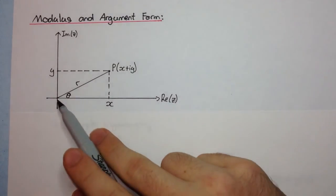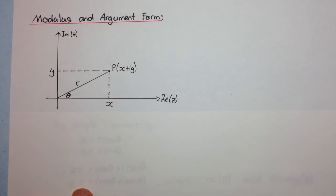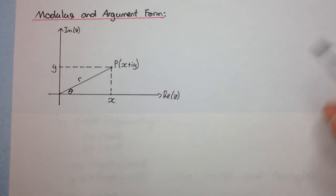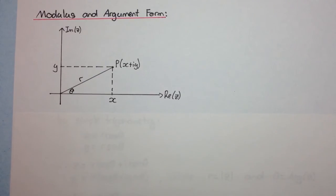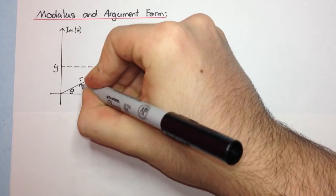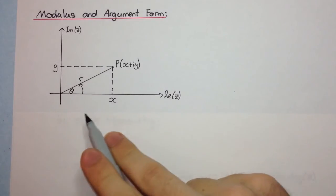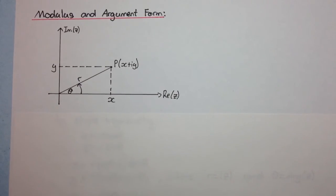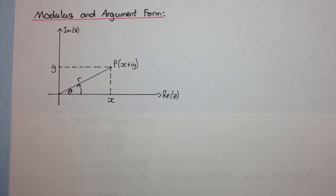So once again, we have r, which is the length of the complex number, length of the vector, which represents the complex number. And we have theta, which defines the direction of the complex number. And this theta is always the angle that the vector makes with the positive real axis.